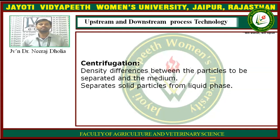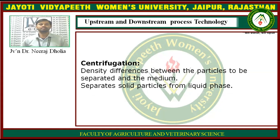Next is the centrifugation process, which can also be used to separate the insolubles in the broth medium. It depends on the density differences between the particles and the medium. It is generally used to separate solid particles from the liquid phase. Gravity forces are used here and the samples are rotated at a fixed rotation, whereby higher density particles will settle down or form a precipitate faster.